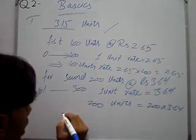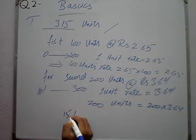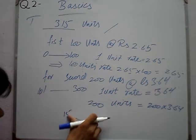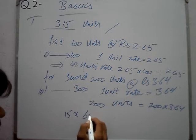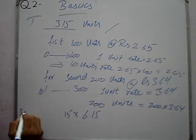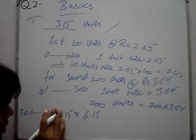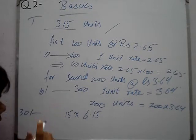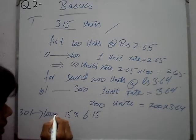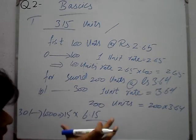For next 200 units — from 101 to 300 — units rate is Rs 3.64, multiply by 3.64. Then from 301 onwards, next 700 units rate — what was it? Rs 6.15. So multiply by 6.15.